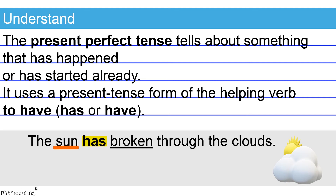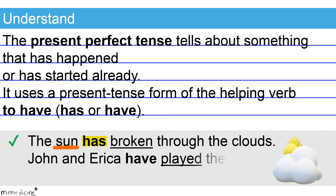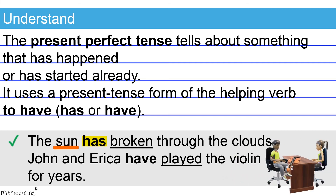Also notice that the main verb 'broken' is the past participle of the verb 'to break.' The past participle verb form of 'break' is irregular. The verb form 'has broken' is the correct present perfect tense. Now check out another example: 'John and Erica have played the violin for years.' Here 'have' is paired with plural subjects — our plural subject is John and Erica. So 'have played' correctly corresponds to its plural subject, John and Erica.